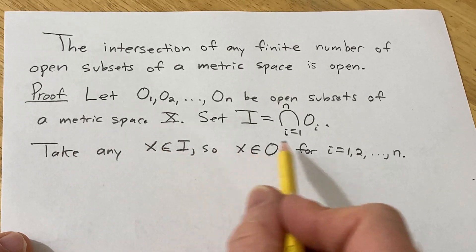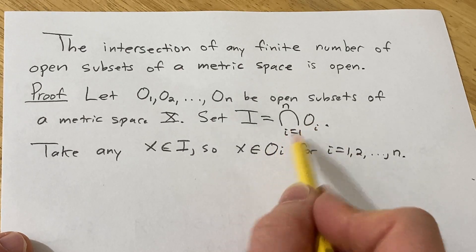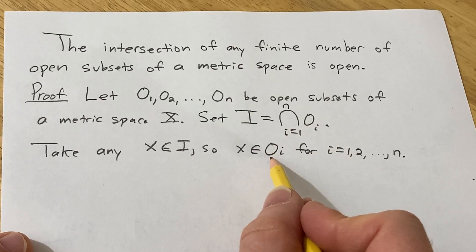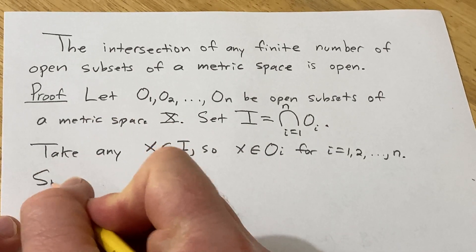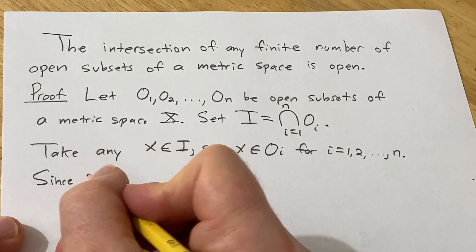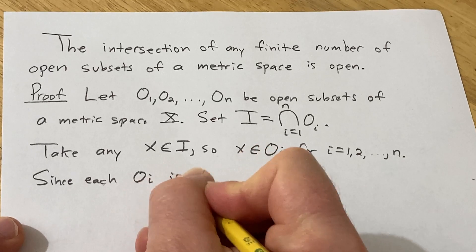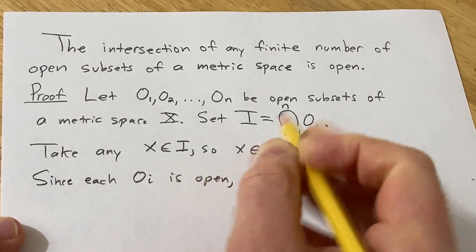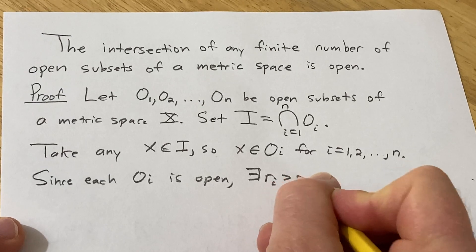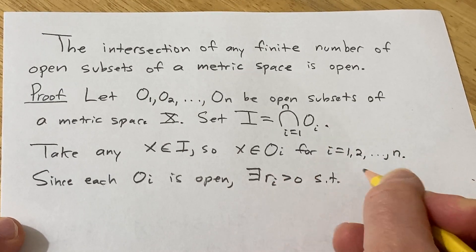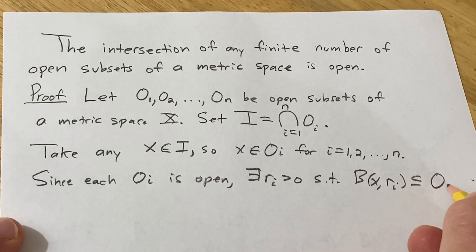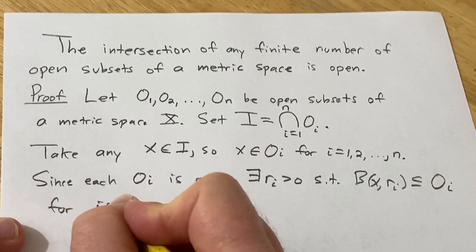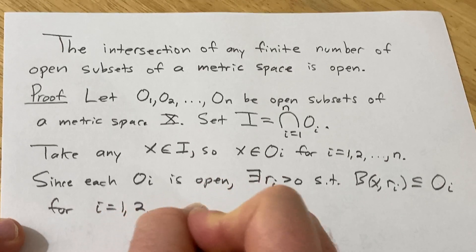So we took an x in I. By the definition of intersection it's in each of these. And since each of these is open, we're going to get a radius for each of these. We're going to get an open ball centered at x that's contained in each of these. So since Oᵢ is open, there exists rᵢ greater than 0, such that there's an open ball centered at x of radius rᵢ contained in Oᵢ. And this is for i equals 1 to n.